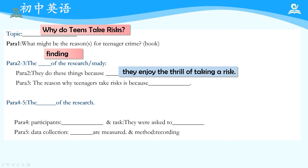Paragraph 3: according to the research, the reason why teenagers take risks is because they choose to do so，也就是说他们是主动选择这样去做的。